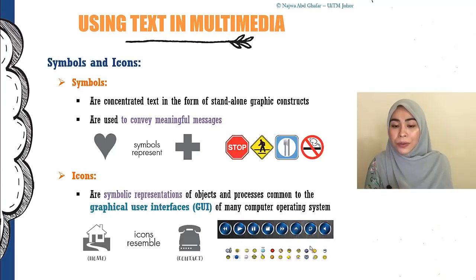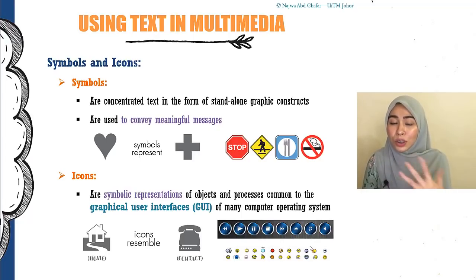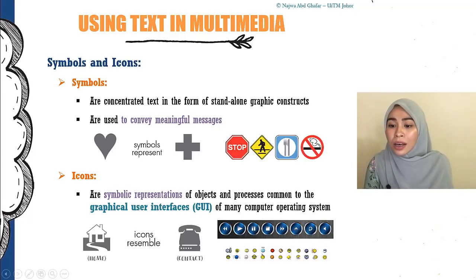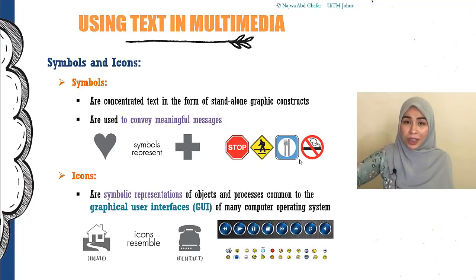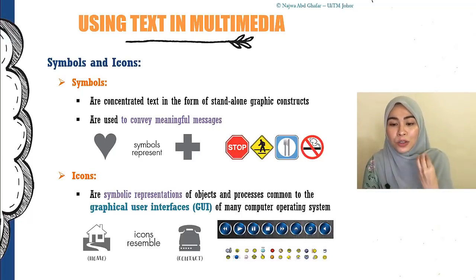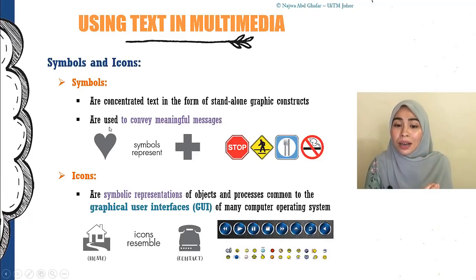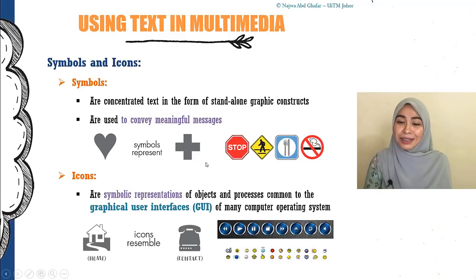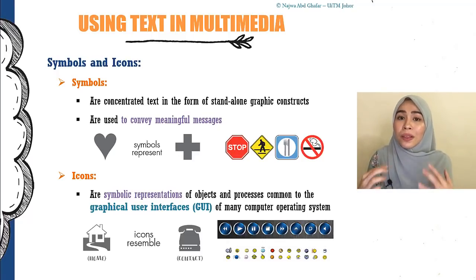Moving on to symbols and icons — there is a difference between them. Symbols are concentrated text in the form of standalone graphic constructs used to convey meaningful messages. You find symbols everywhere — on the highway, for example, a stop sign means stop, a knife and fork means there's a place to eat. They use graphic images to convey messages instead of words. A heart represents love; a plus symbol could represent addition or hospital. There are many possible meanings to symbols.